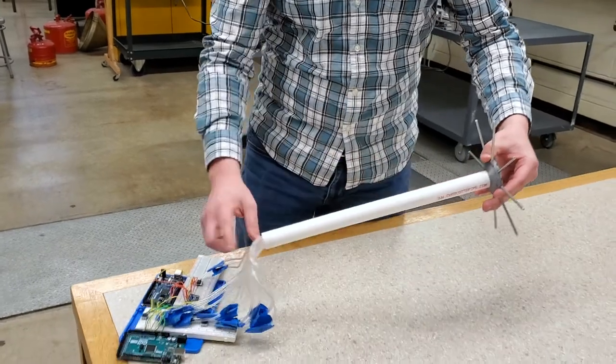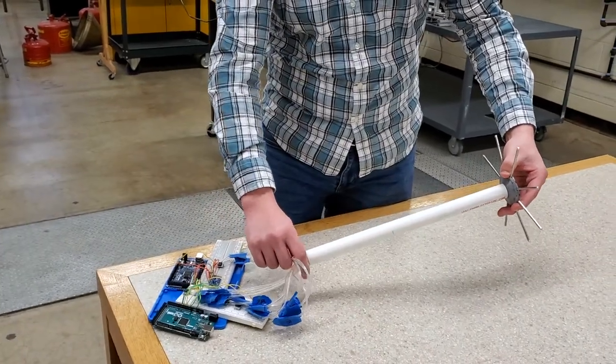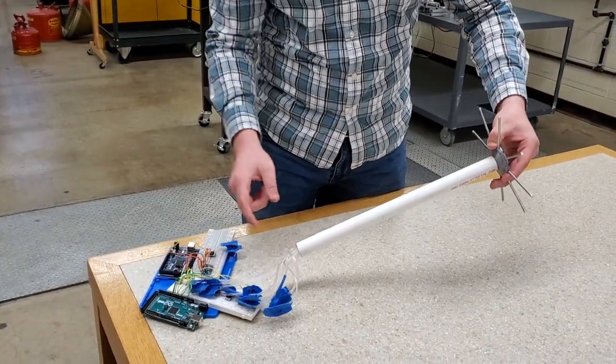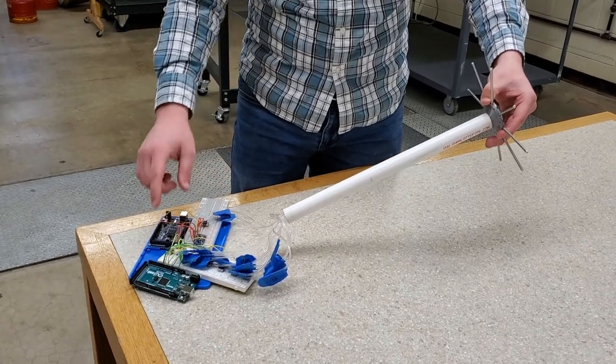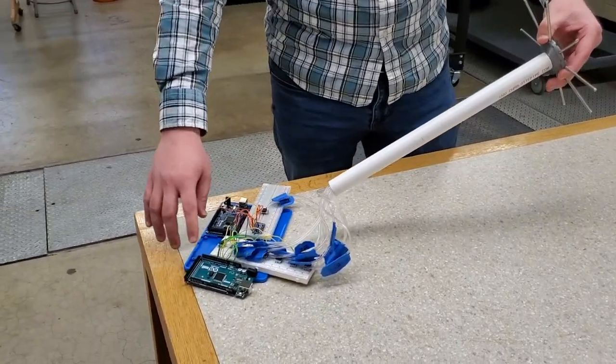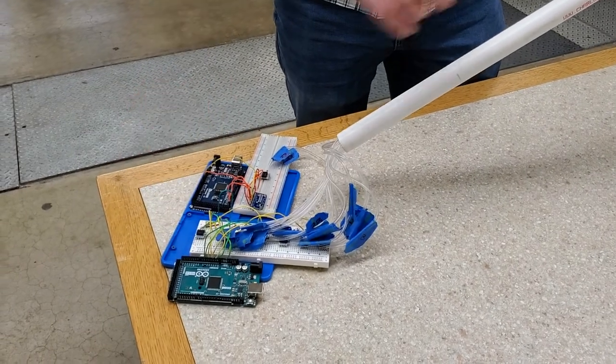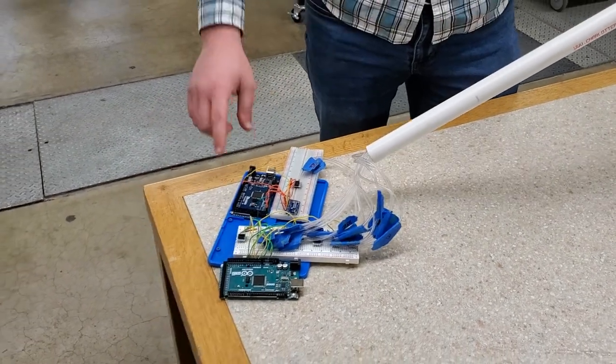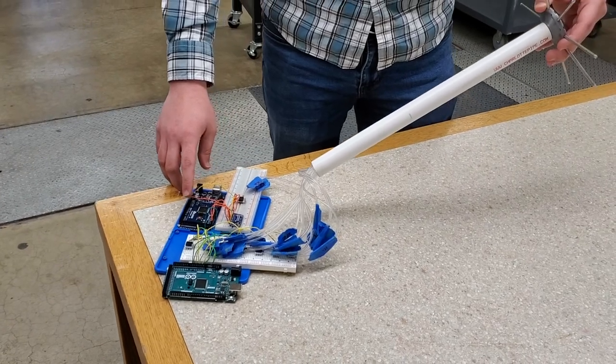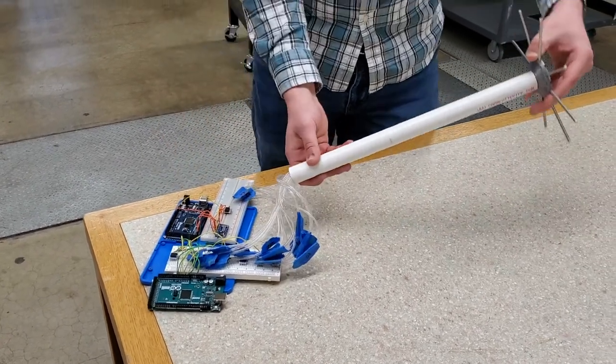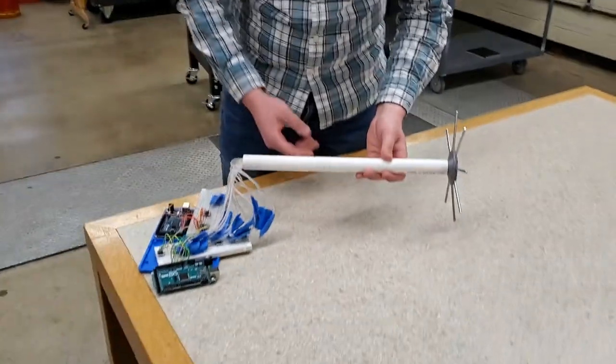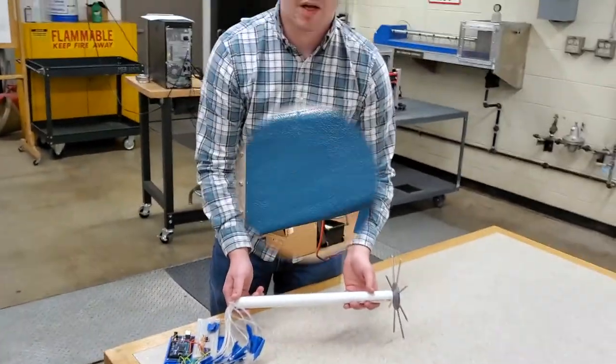This pipe is where these tubes are moving through. They come out and go to these Arduinos here. This Arduino is reading analog data from seven of the pitot tubes, and this Arduino is reading digital data from one of the pitot tubes. We will now go over to the wind tunnel to show you this prototype in action.